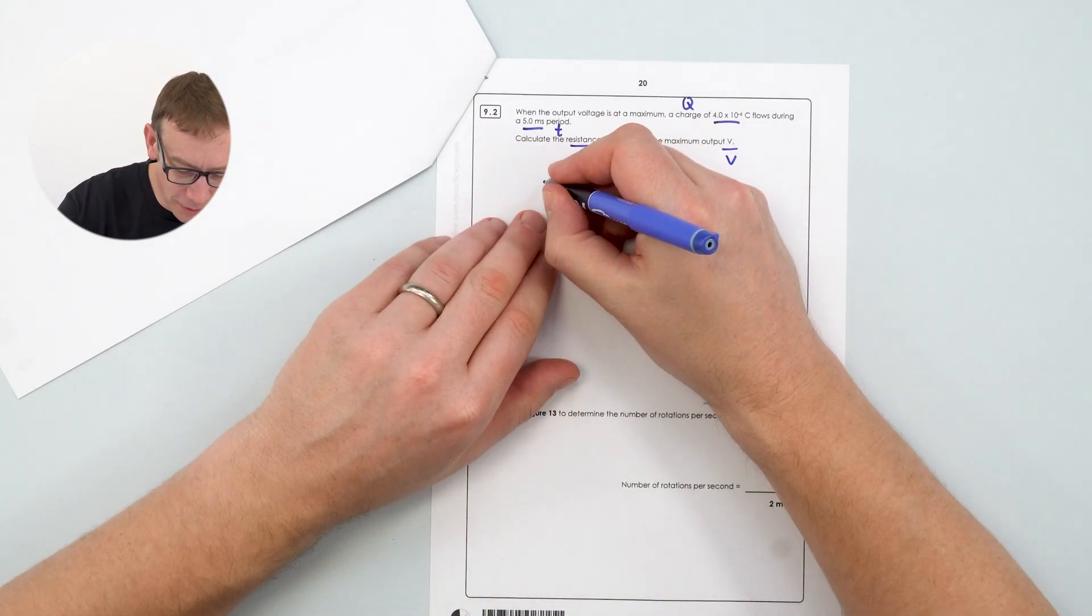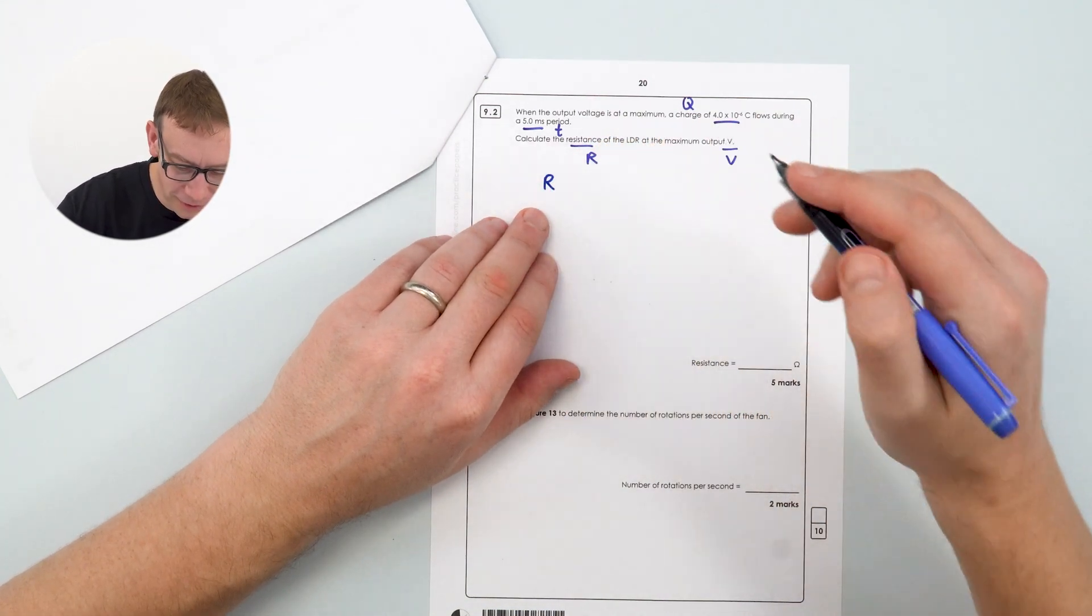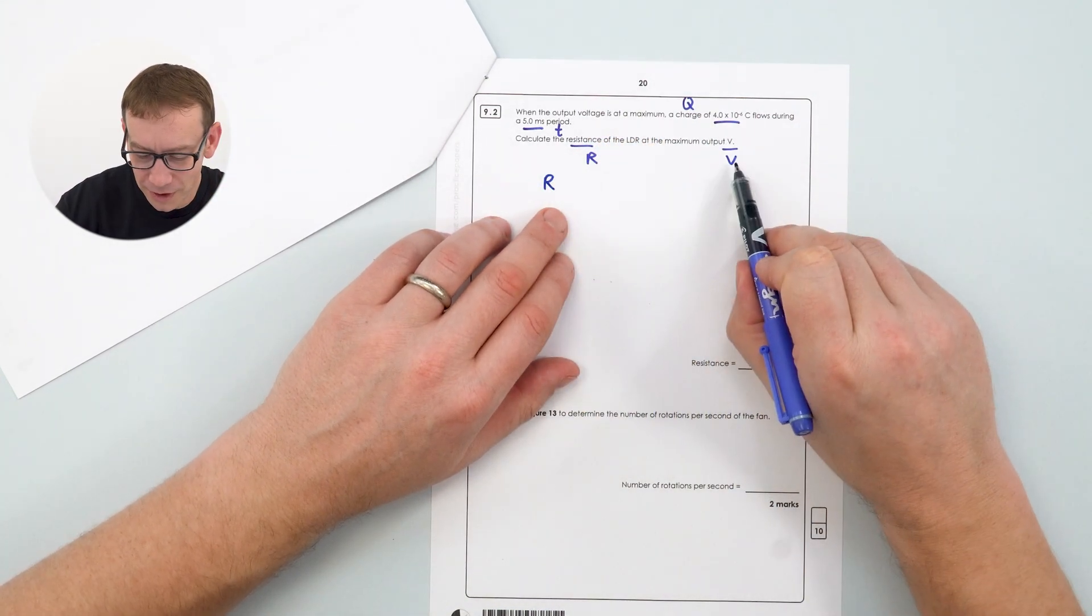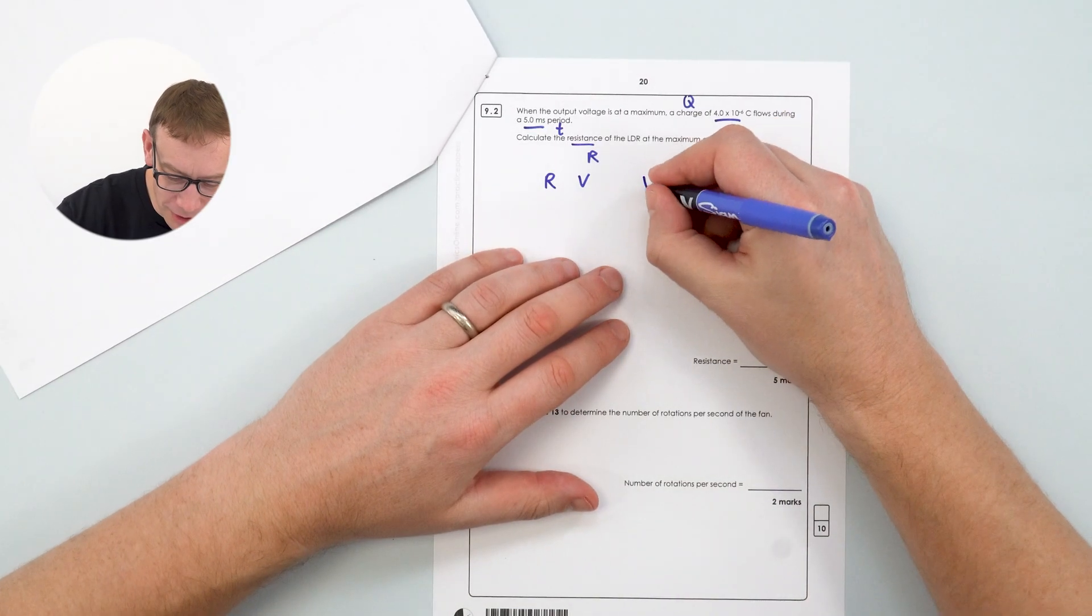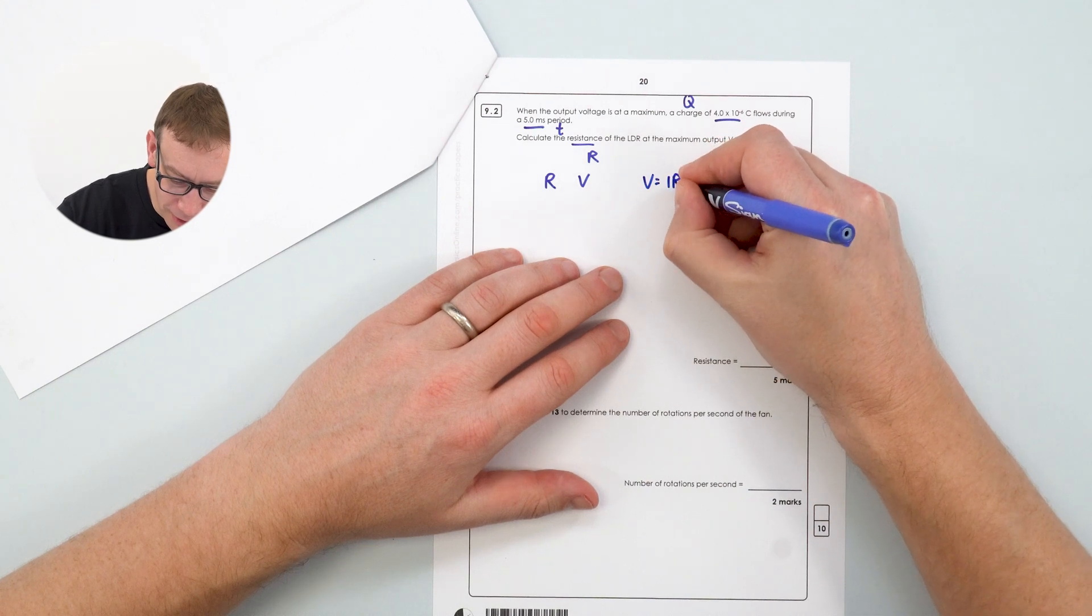So if we want to work out the resistance, this is going to be related to V. Okay so how is V related to R? Well I guess I could look in my formula sheet, but actually I've done my work, I've done my revision, I know which equations come up, and we know that V is equal to IR. Okay now we want to find R, so we can say that R is equal to V over I.